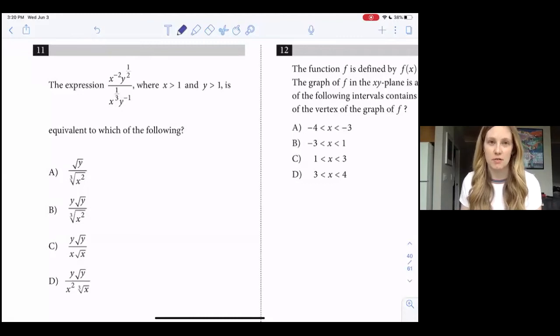Let's take a look at number 11 in the no calculator section. We have the expression x to the negative second power times y to the one-half power over x to the one-third power times y to the negative first power, where x is greater than one and y is greater than one, is equivalent to which of the following.